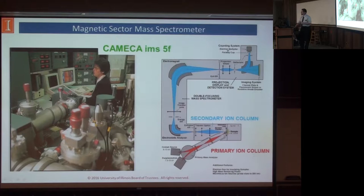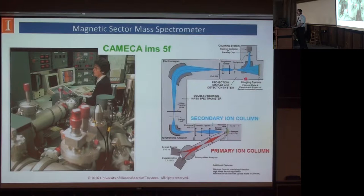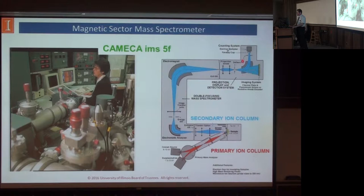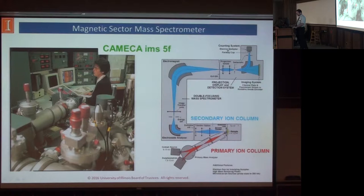The Cameca IMS-5F that we have is very good for doing dynamic SIMS. We send a continuous beam in — either cesium or oxygen — to hit the sample surface. Then we pull out the secondary ions and bend them through an electrostatic analyzer, an electromagnetic analyzer, and through a final slit before they hit one of our detectors. You're only measuring one mass at a time, though you can quickly switch between them, so it's very useful to know what you want to look for before you put your sample in. For detectors, we use an electron multiplier for 0 to 10^5 counts per second, or the Faraday cup for 10^6 or better.